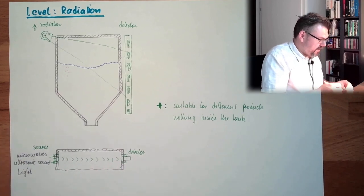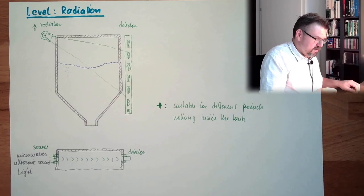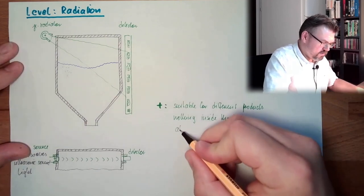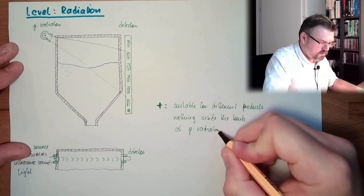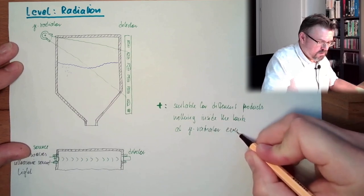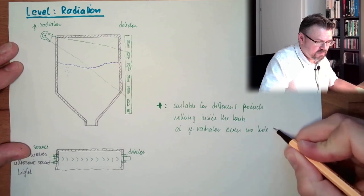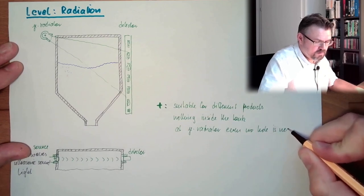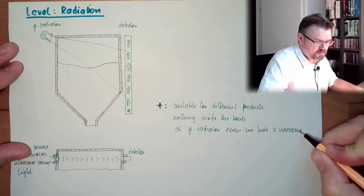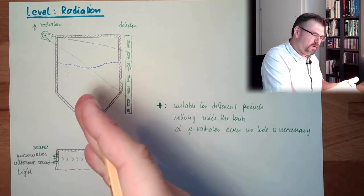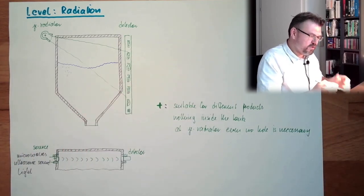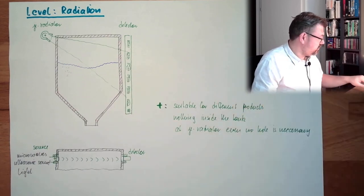Maybe we should write that gamma radiation, even no hole is necessary. So this stays where it is, and we can measure dangerous goods.